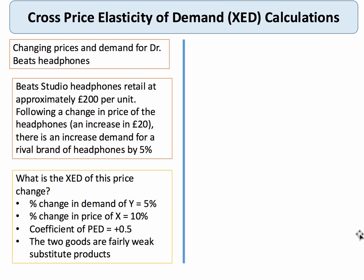Let's assume the price of Dr. Beats Studio headphones goes up from £200 to £220 — a 10% increase — and that leads to an increase in demand for a competing brand of 5%. The cross price elasticity is 5% divided by 10%, giving a plus 0.5 coefficient. That tells us these two goods are fairly weak substitute products, perhaps because consumer loyalty to Dr. Beats is especially strong.